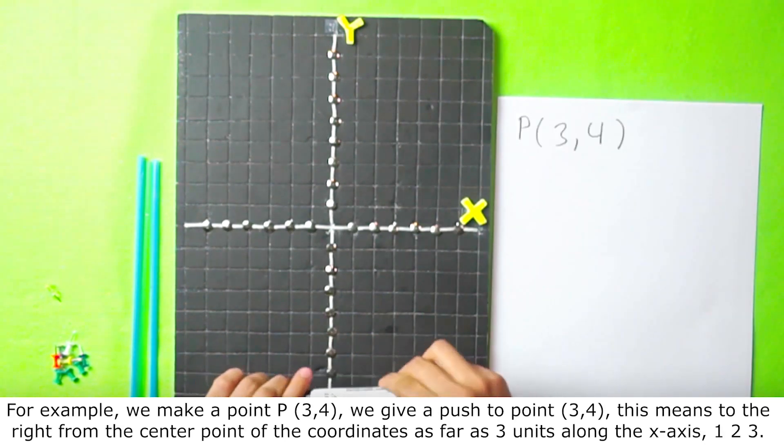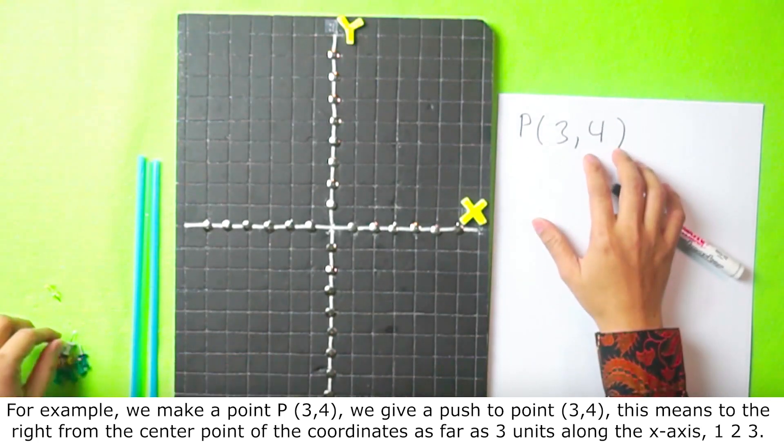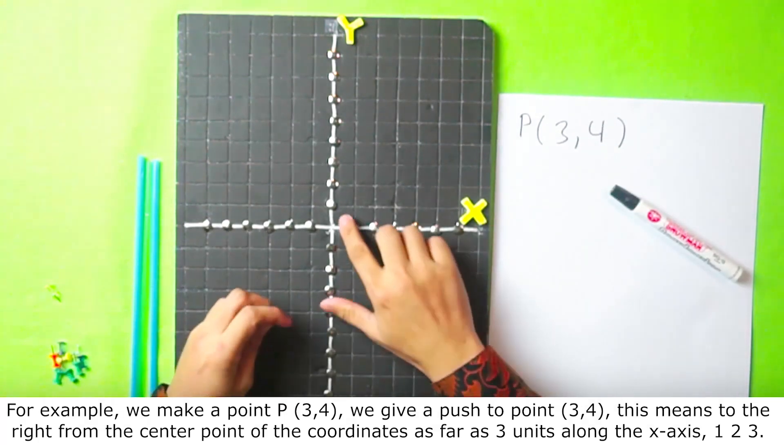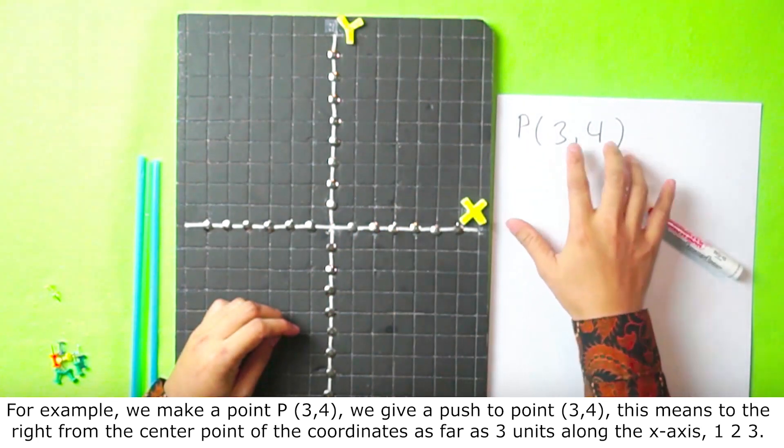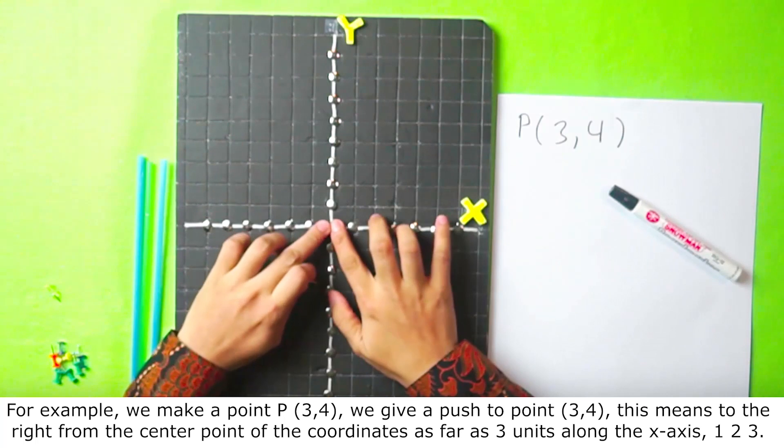For example, we make a point P at 3, 4. We give a pushpin to point 3, 4. This means to the right from the center point of the coordinates as far as 3 units along the x axis.